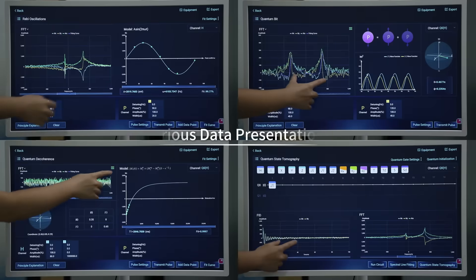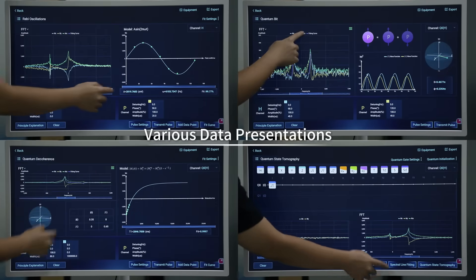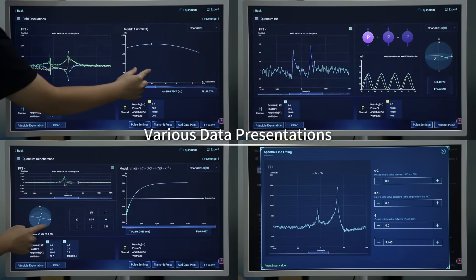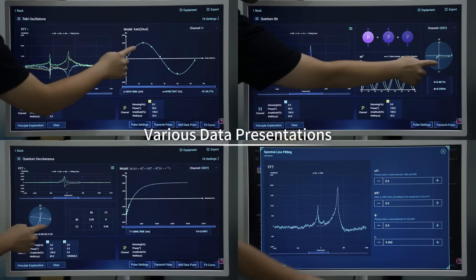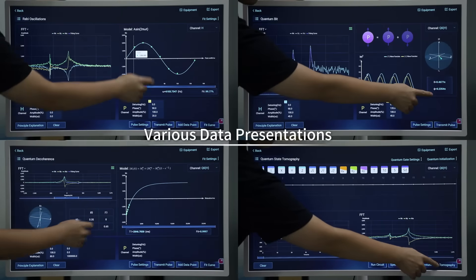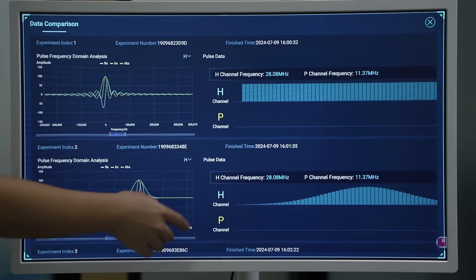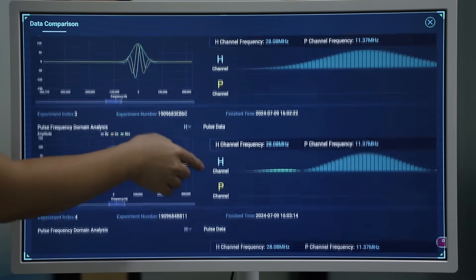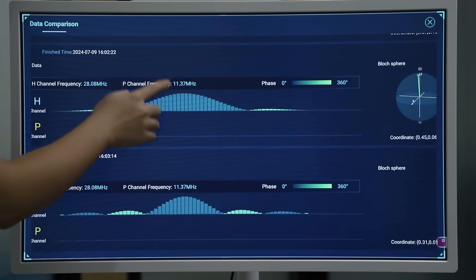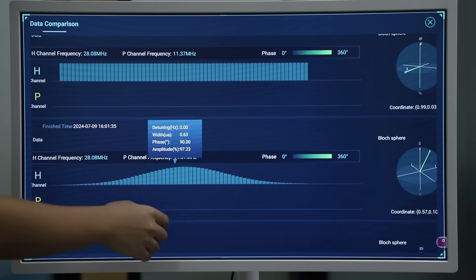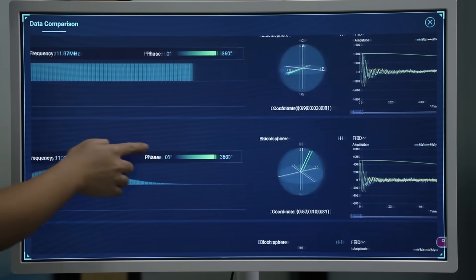Each experiment involving underlying operations presents the time domain and frequency domain original signals generated by the spin. Different types of experiments also have different graphics and charts. These visual results obtained from processing original data make professional experimental results intuitive and easy to understand.